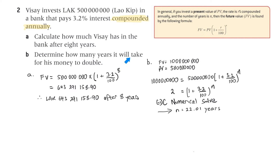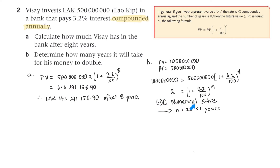Part B: determine how many years it will take for his money to double. The present value is 500 million, so doubling that gives 1 billion — 1,000 million. So 1,000 million equals 500 million times (1 + 0.032) to the power N. To find N, use the numerical solve function on your calculator and you get 22.01 years.